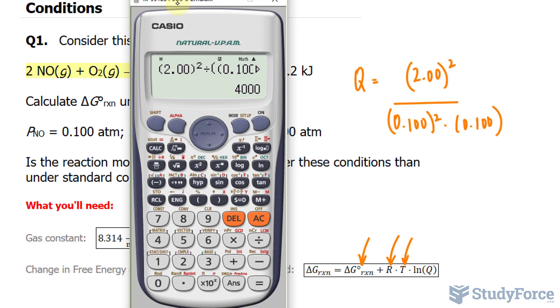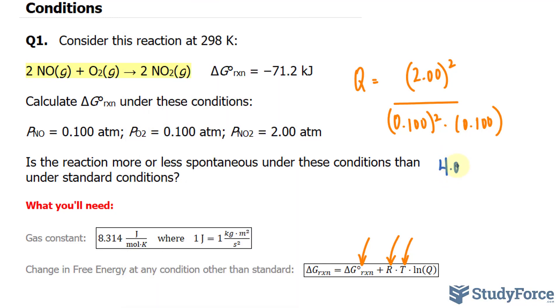We need this to three significant figures. So I'll write down 4.00 times 10 raised to the power of 3. That's the reaction quotient. And we'll substitute that number where we see the Q.